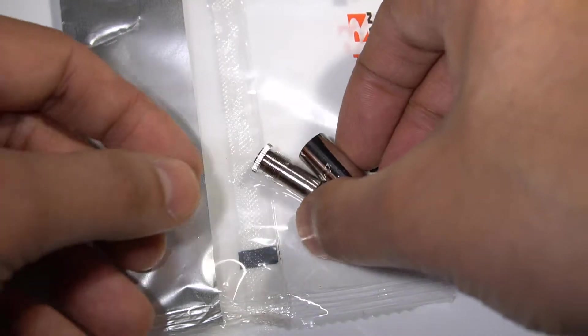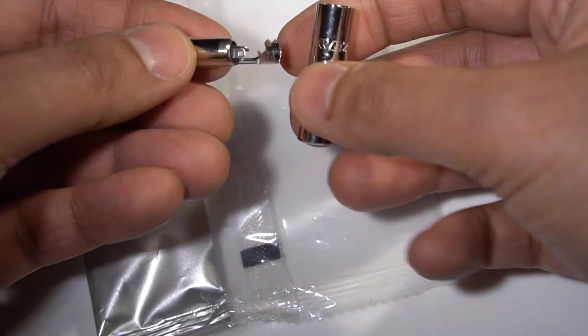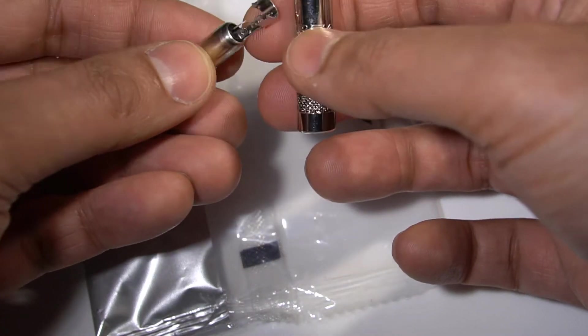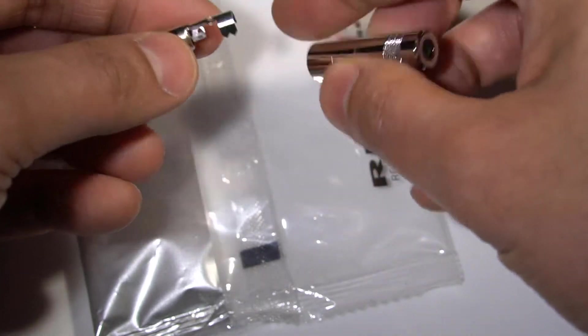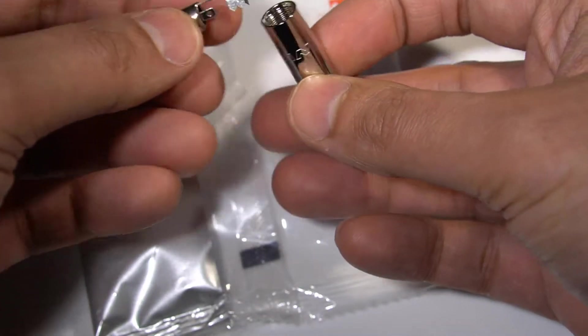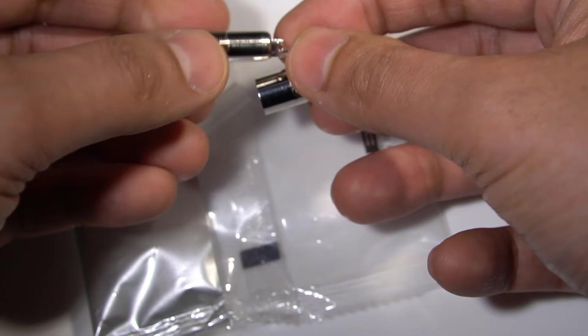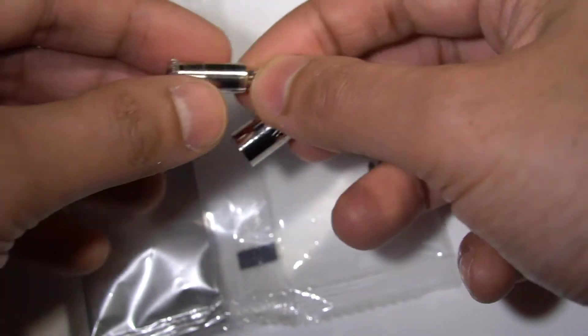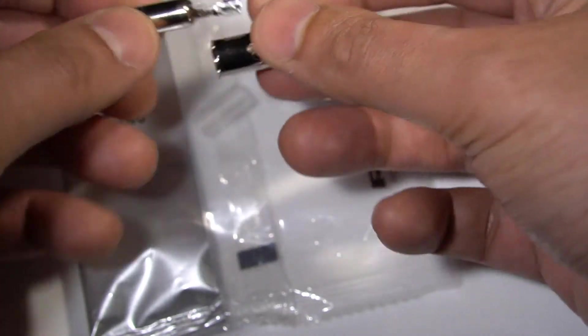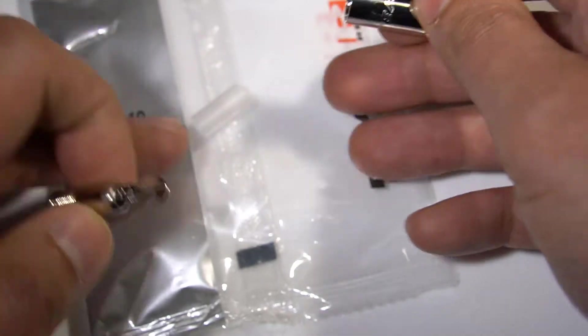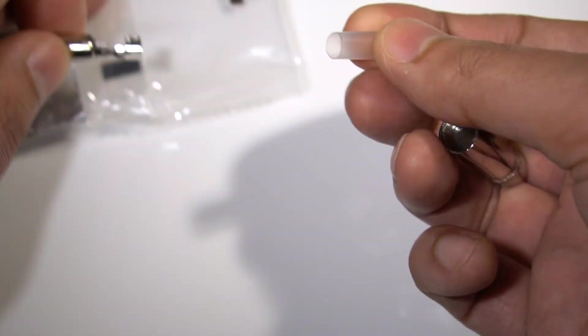This is a Rean stereo jack socket 3.5mm. And again, it's all metal shell. I don't really like the plastic ones because they're not fully screened. So they're not great for use with microphones, for example.